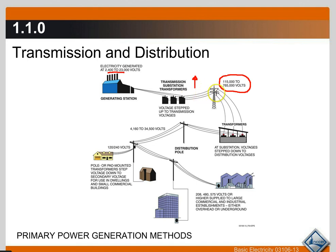This travels across the country for several hundreds of miles until it hits a substation. Then that substation steps the voltage back down because we're a little closer to where it's going to be used. It's then sent through the transmission lines you see in your neighborhood — the big ones on the side of the freeway. Some of them are buried. It goes through the transmission lines until it comes to a residence, and up on those transmission poles there's a smaller transformer that steps the voltage down to what we use in our homes: 120 and 240 volts.